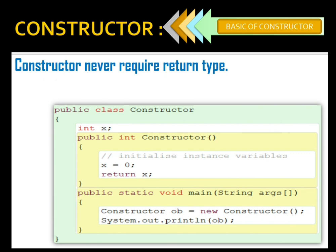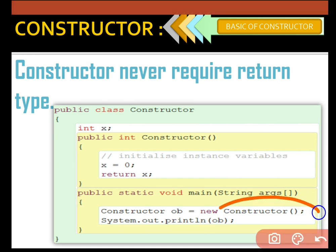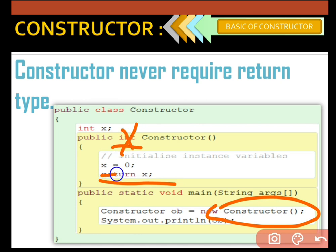It is of no use because there is no space to store any value. When a constructor is called, it doesn't have any space to receive any sort of values — that's why it is of no use to return any value from a constructor. That's why we are not using any return type here.